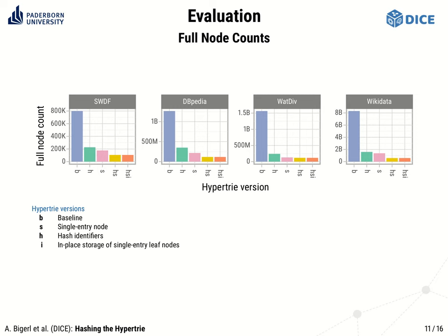First, let's look at how the optimizations reduce the amount of full nodes in HyperTries on the four datasets. The baseline version, in blue, requires up to two times as many nodes as the datasets have triples. Using hash identifiers, here in green, reduces the amount of nodes required drastically. The optimization for single entry nodes, here in pink, has a similar effect. Combining both, here in yellow, turns out to be even more effective. Applying additionally the in-place storage of single entry leaf nodes shows no further improvement in these plots due to the metric of number of full nodes, but we will see the effect of this optimization in the following slides.